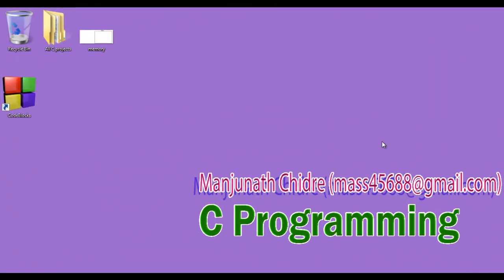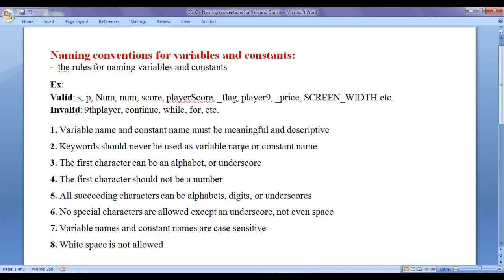Hello friends. Welcome to C programming video tutorials series. From the past few video tutorials we are trying to understand variables and constants. In the previous video tutorials we understood why we need variables and why we need constants, what is a variable and what is a constant, how to create and initialize variables, how to declare and initialize constants. In this video tutorial I would like to discuss naming conventions for variables and constants — that is, the rules for naming variables and constants.